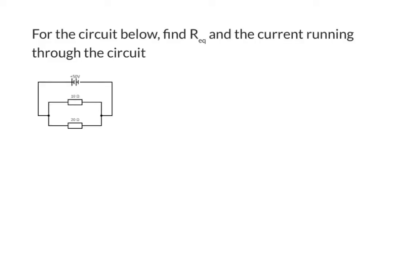So let's go ahead and do an example problem. For the circuit below, I'm going to find my equivalent resistance, and then use that to find the current running through the circuit. Let's start by listing out our givens. Looking at the circuit, I know that my voltage is equal to 50 volts, and my two resistors, R1 and R2, have values of 10 ohms and 20 ohms, respectively.